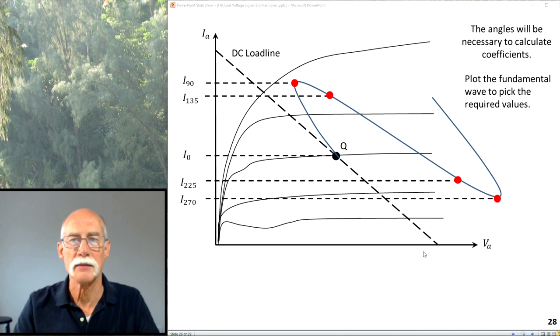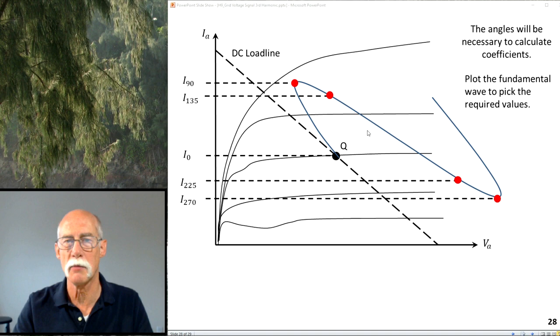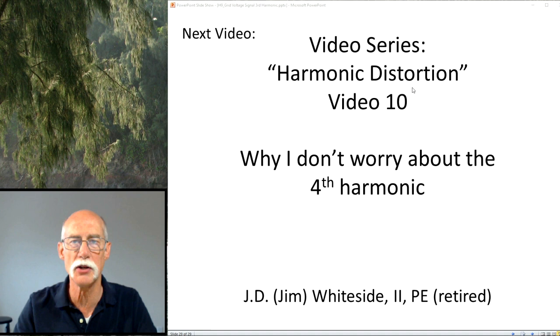Again, we have to pick our angles, but just like in the second order harmonic, we know where 135 is, we know where 225 is, because we can calculate the sine of that angle and pick those four points off. So we know where they are here, we know where they intersect the grid line, we can pick the currents off, and we do our calculation.